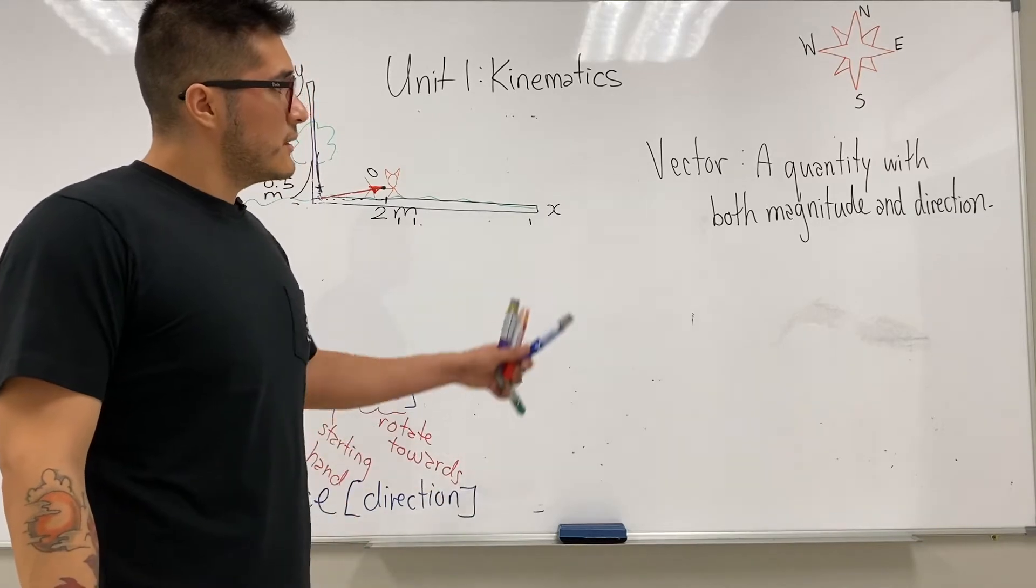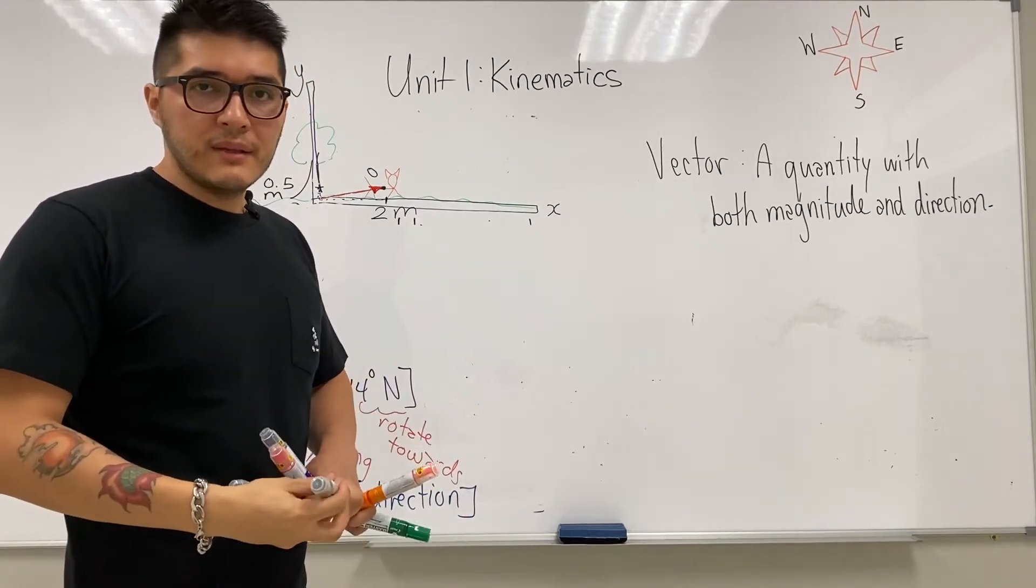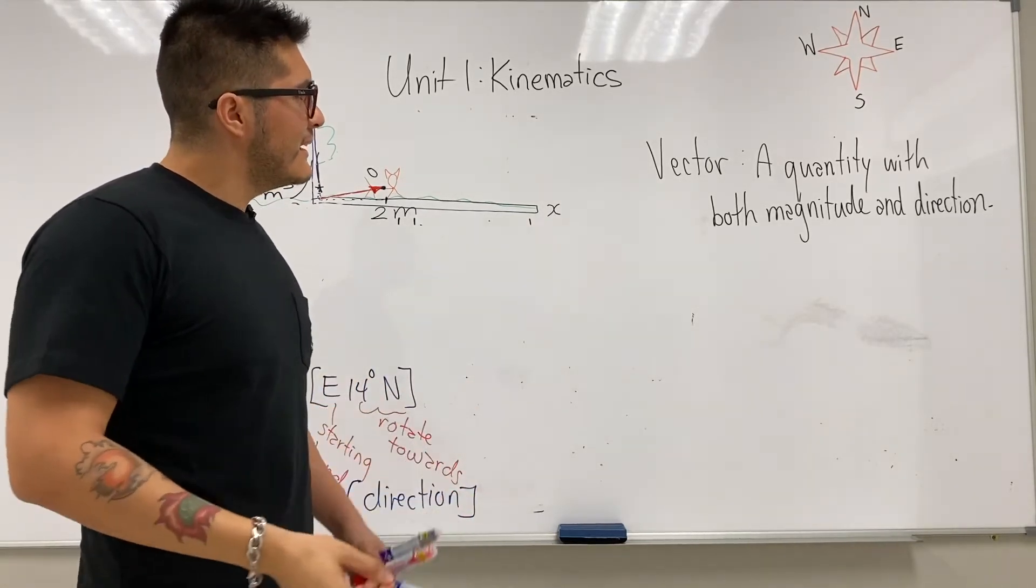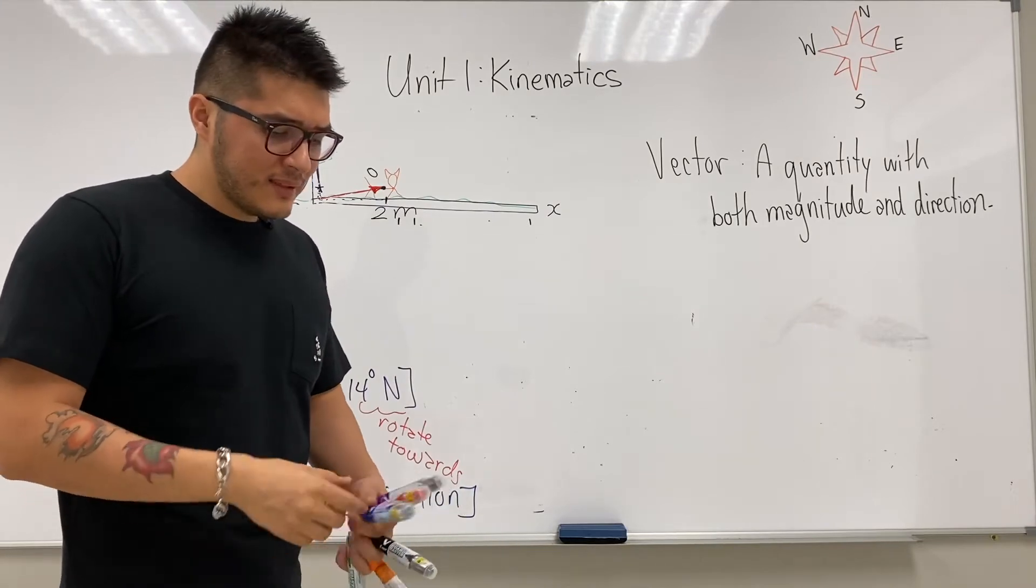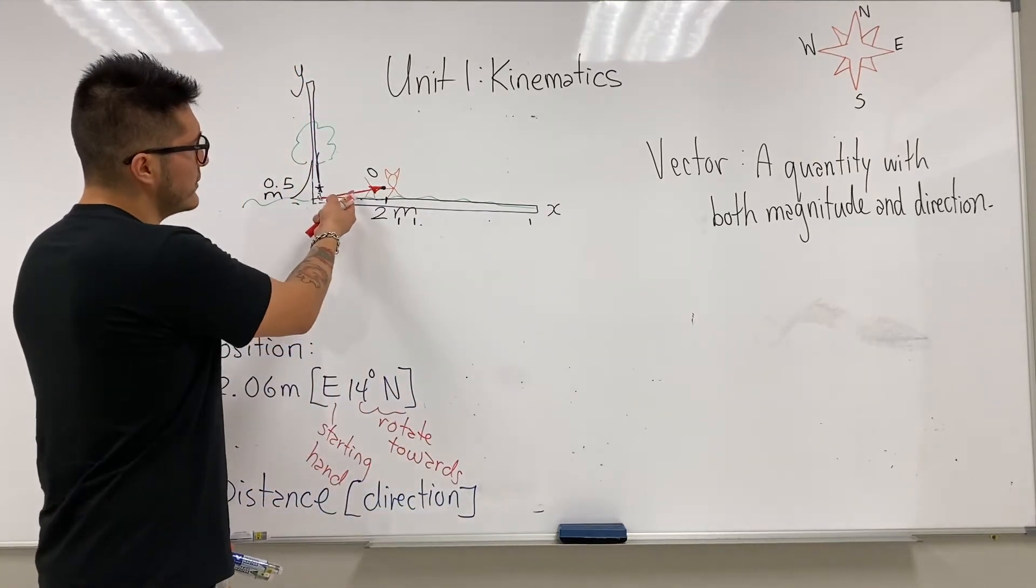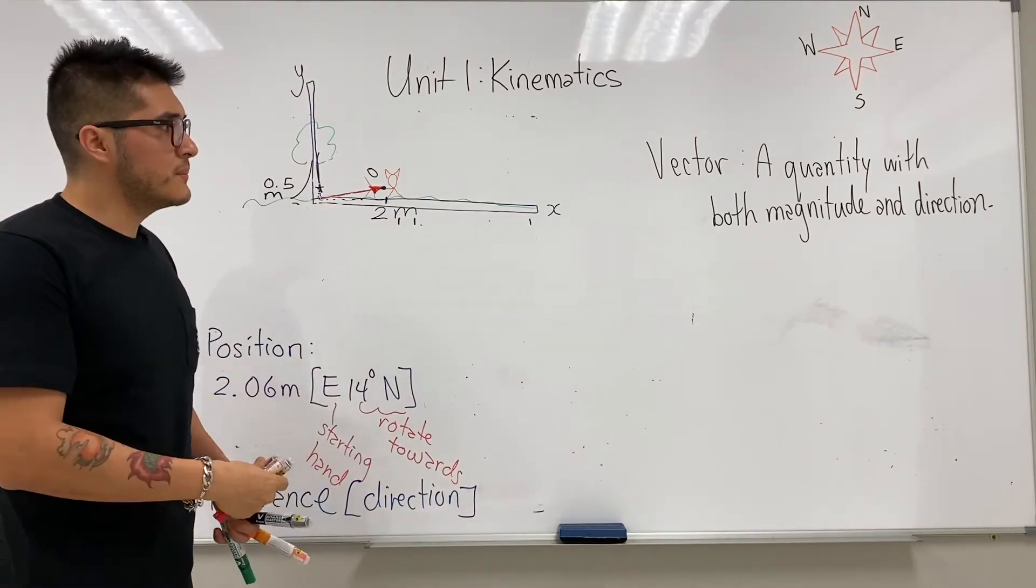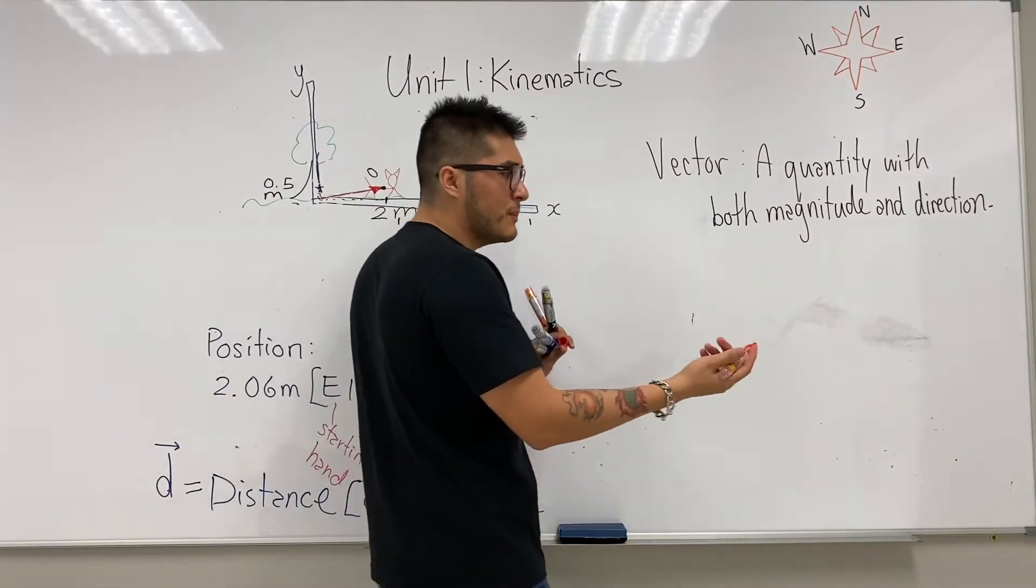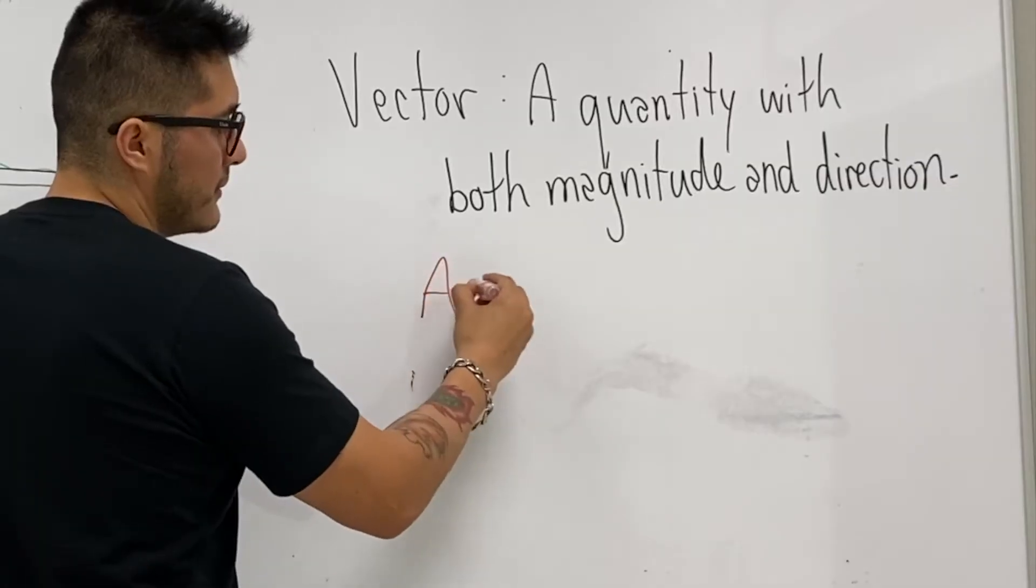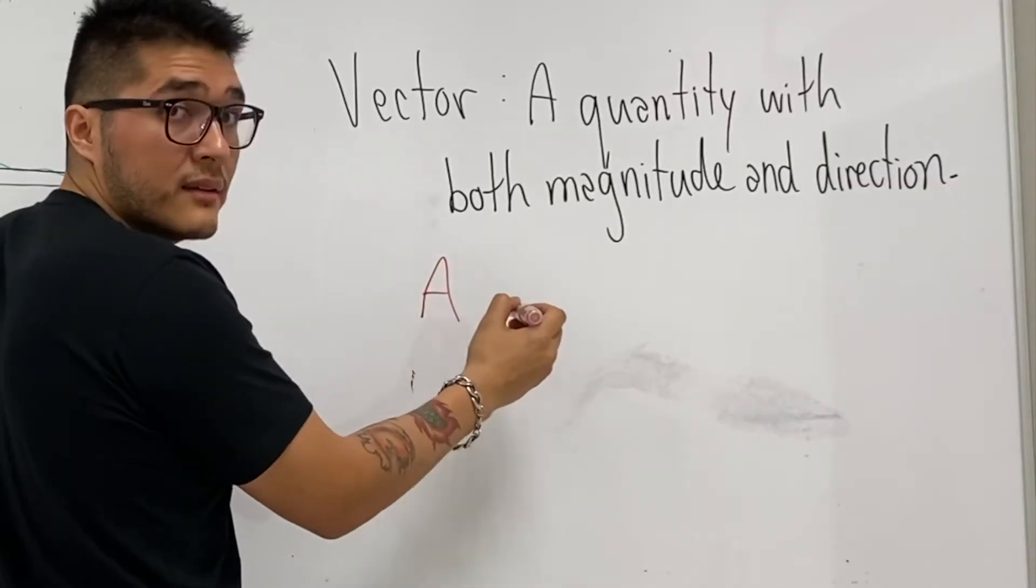A vector is a quantity with both magnitude and direction. That's a very technical term. Let's simplify it. If we describe this, it looks like a line with a direction. A much simpler way of thinking about it is a directed line segment.